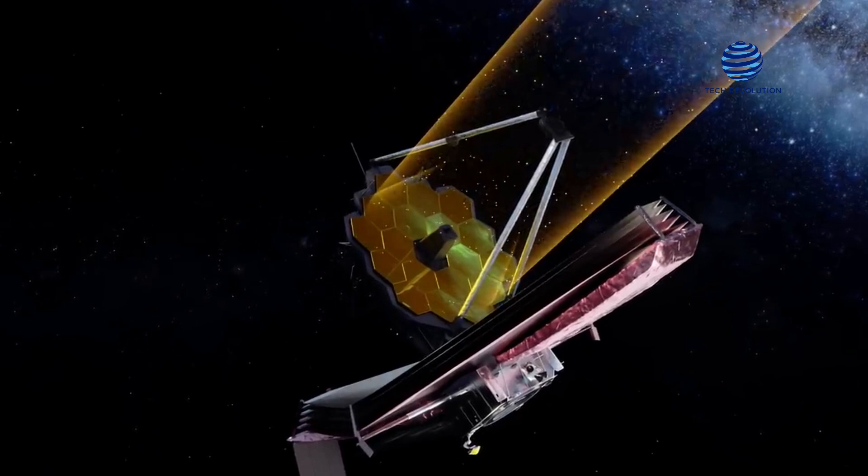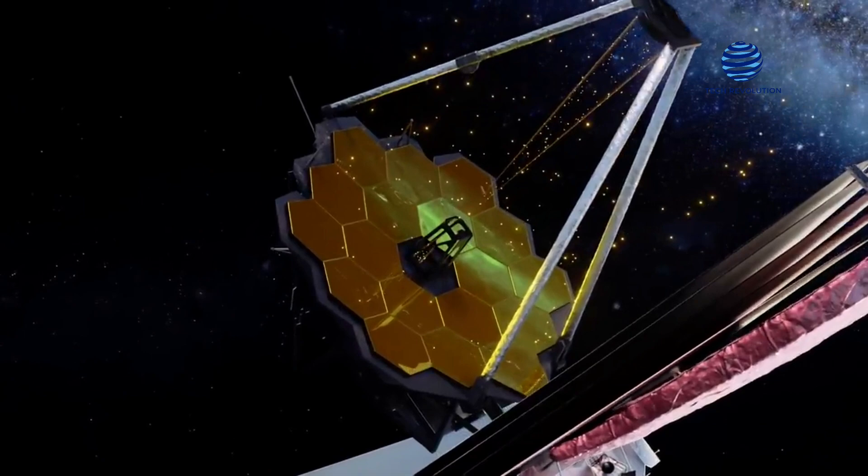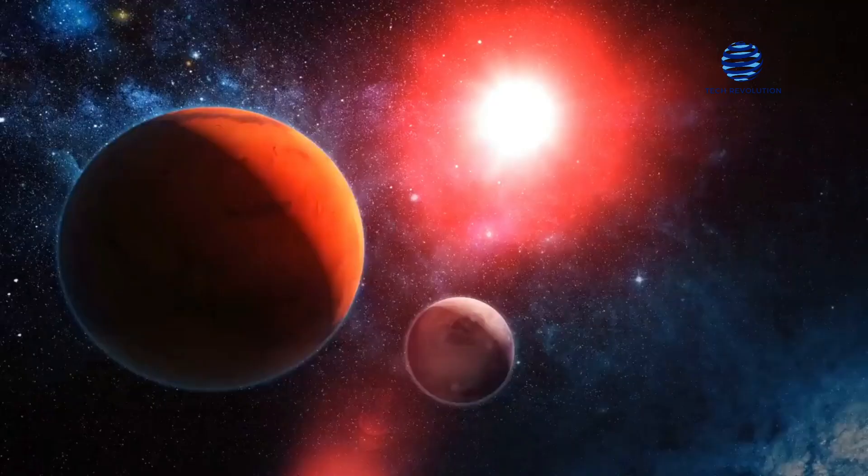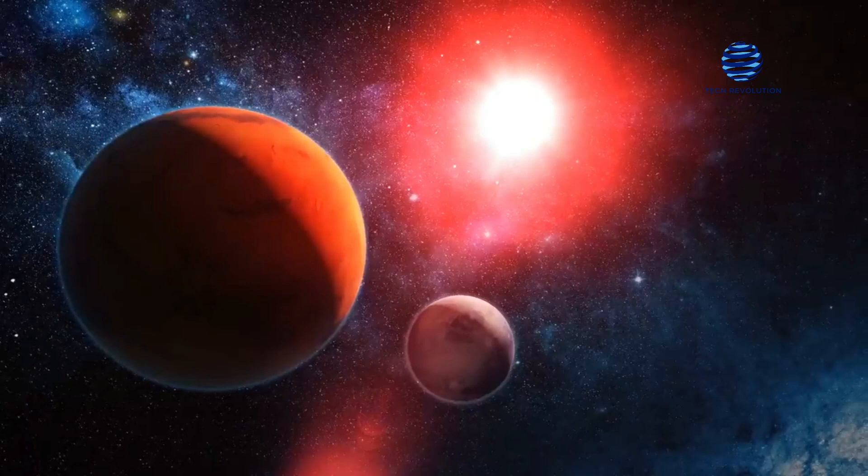The SOSS mode will allow the James Webb Space Telescope to collect extremely accurate spectra from a single bright object at a time. This mode is designed to conduct time-series observations which are perfect for researching phenomena like an exoplanet transiting in front of its host star that vary over the course of an observation that generally lasts for many hours.